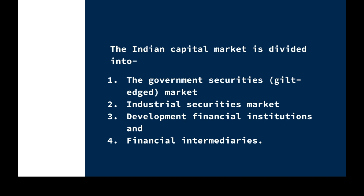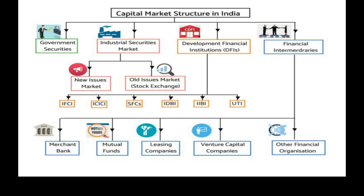This chart clearly shows that the four main institutions involved in the Indian capital market are: government securities market, industrial securities market, development financial institutions or DFIs, and financial intermediaries.